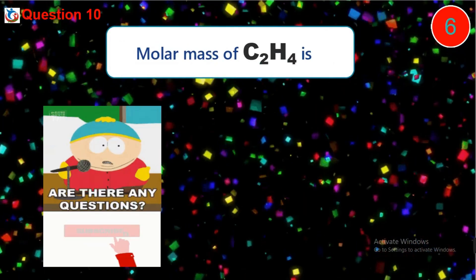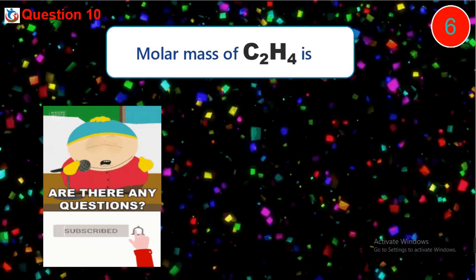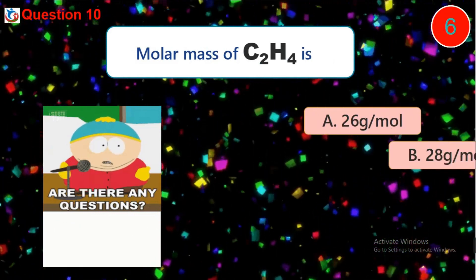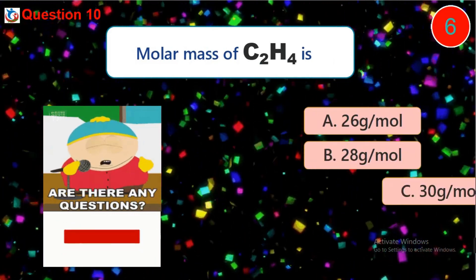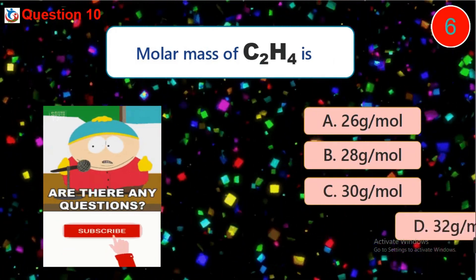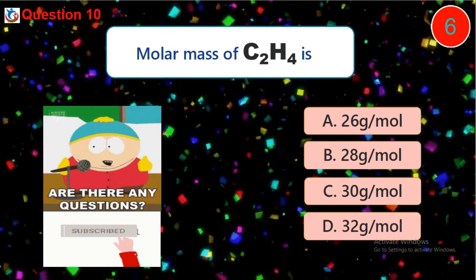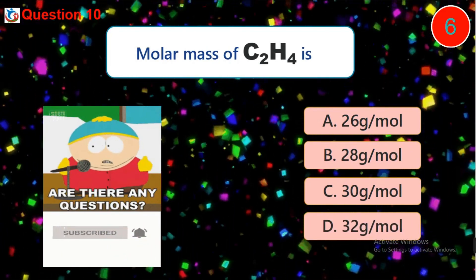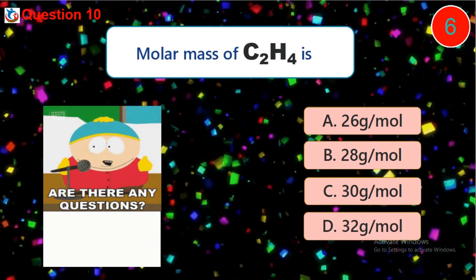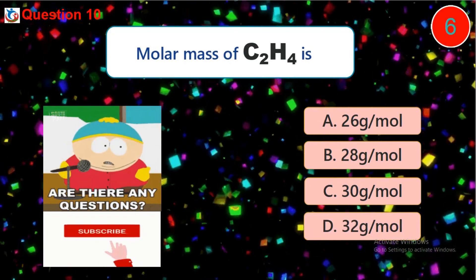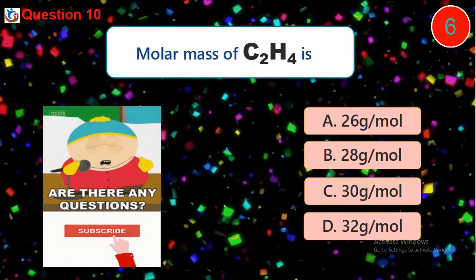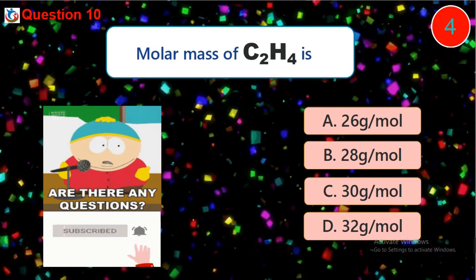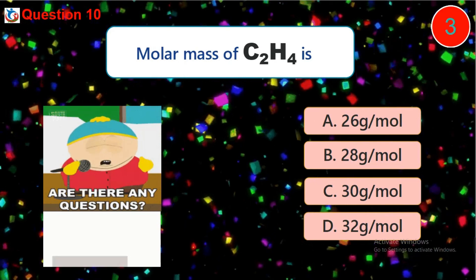Question 10: Molar mass of C2H4 is — A) 26 grams per mole, B) 28 grams per mole, C) 30 grams per mole, D) 32 grams per mole.